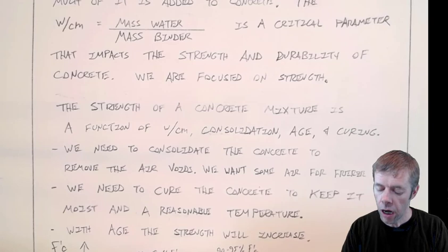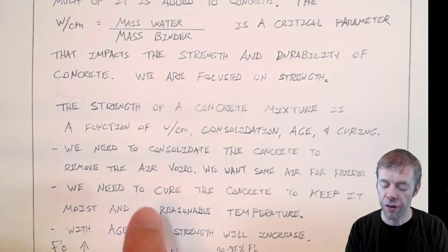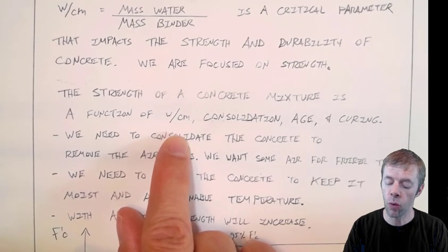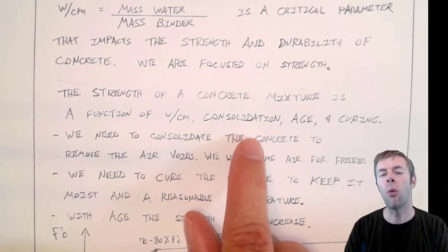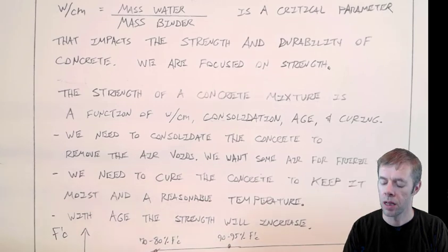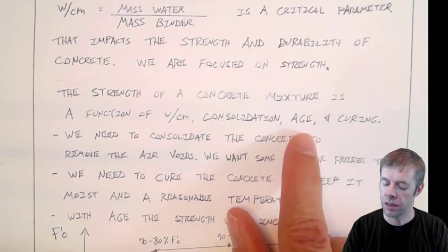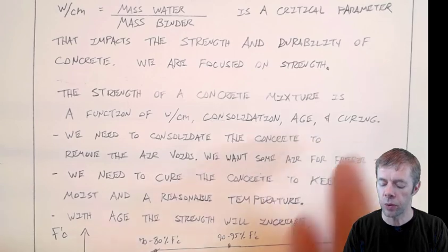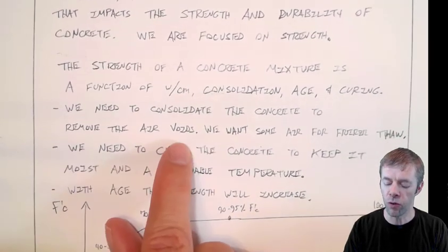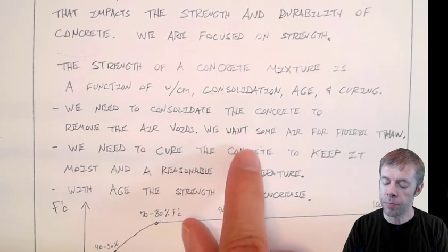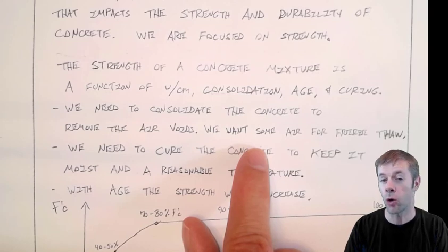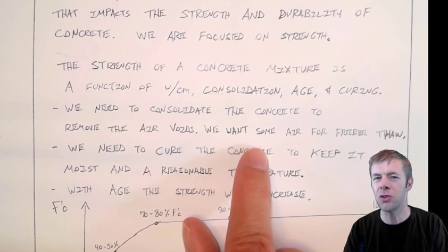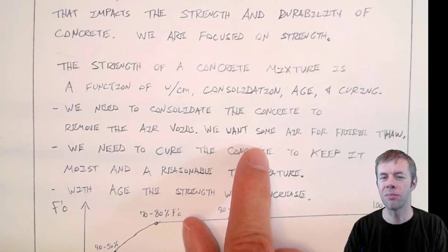The strength of concrete is a function of all of these different things: the water-to-cement ratio, how well it's consolidated — that's how well you get the air bubbles out and bring everything together — the age of the concrete, and the curing. We need to consolidate the concrete to remove air voids because air is not very strong. But we also want some air inside for freeze-thaw durability. So you don't want to get all the air out; you just want to get the big bubbles out.